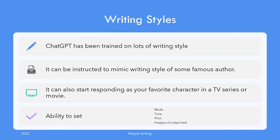You can instruct ChatGPT to mimic the writing style of some famous author. ChatGPT is well-read and has read most content by all famous writers. All you need to do is instruct it to be an AI bot that is very good at mimicking an author's writing style.